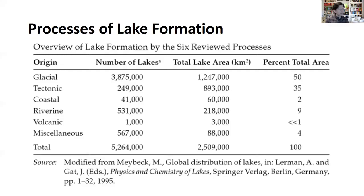On this table we've got the origin in the left column, the number of lakes, total lake area, and the corresponding percent total area for each category. The first one listed is glacial. It turns out that most small shallow lakes form due to processes related to either glacial erosion or glacial deposition. We tend to see a lot of lakes in the mid to high latitudes — throughout northern Europe, Asia, and North America — because these regions were covered with alpine glaciers, mountain glaciers, or large continental-scale ice sheets during the last ice age about 20,000 years ago.